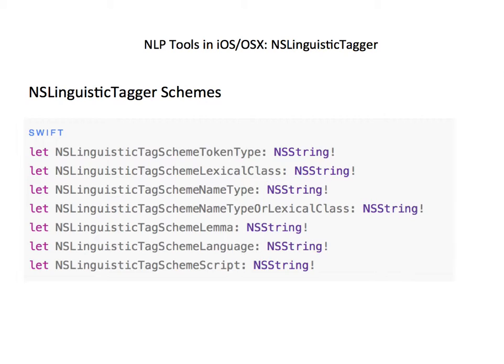The next option combines nameType and lexicalClass, since often we'll want to do part of speech tagging and named entity recognition at the same time. Then we have lemma, which converts word tokens into their canonical form — often referred to as the dictionary form, because it's the version of a word you might look up in a dictionary. For example, the lemma for run, running, runs, and ran is run. And finally, there are the language and script options, which return the language code and the standard script abbreviation for a given token.